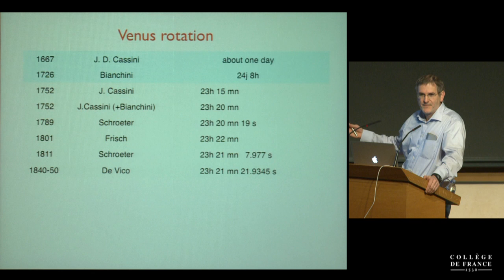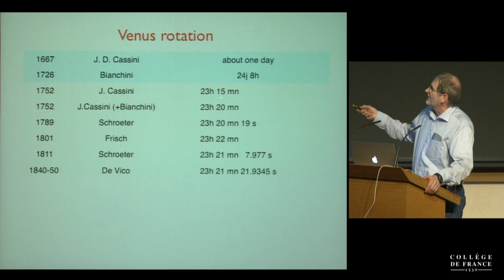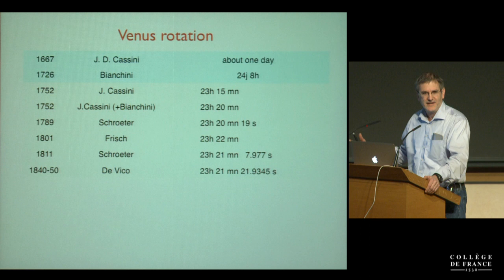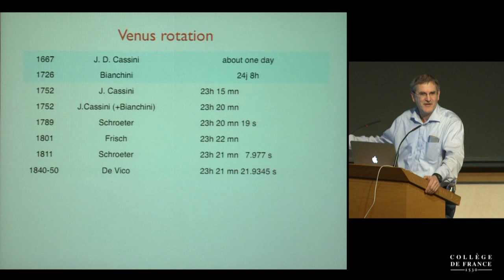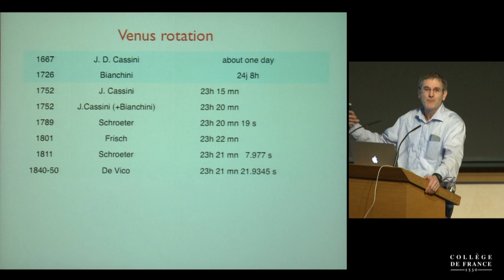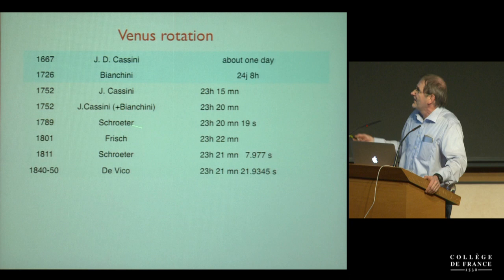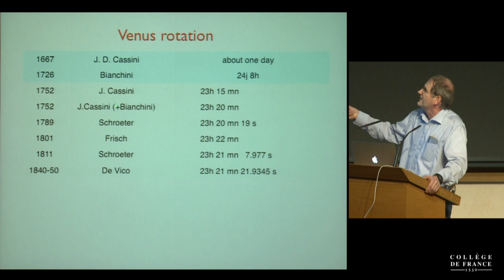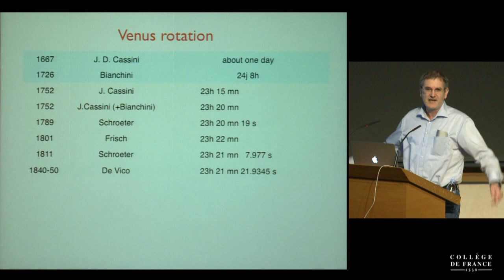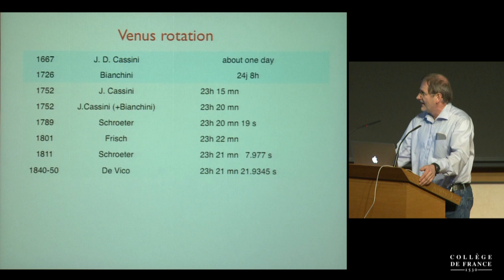Jacques Cassini made some observations and, as a good son, largely confirmed what his father found: about one day. Then there was a whole succession of measurements where everybody was finding improved values around 24 days, proposing campaigns of observation to funding agencies. And in fact Jacques Cassini was able to show that including Bianchini's observations, he could find 23 hours and 20 minutes — science advancing with more and more precise observation.